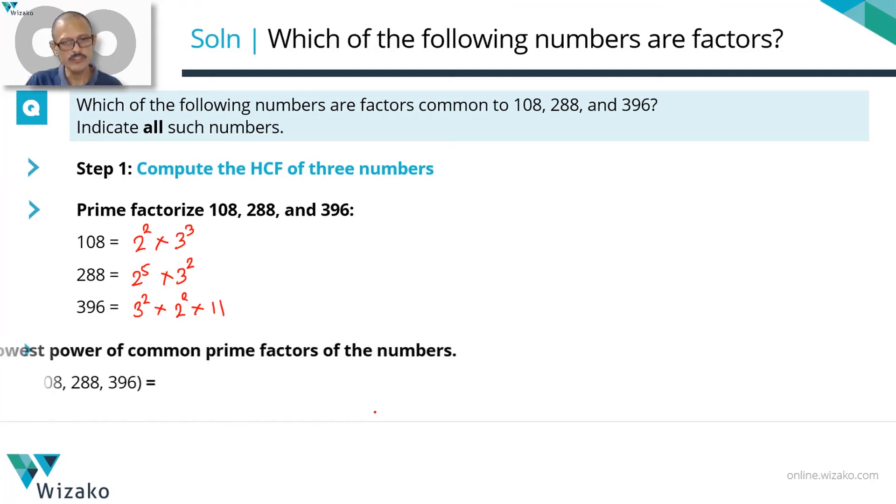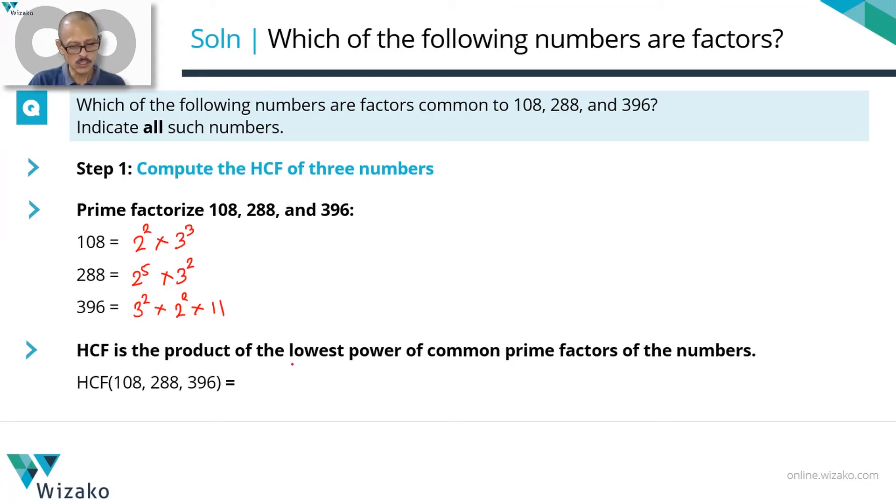The HCF is the product of the lowest power of the common primes. What are all the prime numbers common to all these three numbers? 2 is a prime factor of all the three numbers. So let me take 2. 3 is also a prime factor common to all the three numbers, 11 is not. So these are the two prime factors common to all the three numbers. What is the lowest power of 2 that we find in these numbers? 2 squared, 2 to the power 5, 2 squared. So we'll go with the 2 squared. In the case of 3, 3 cubed, 3 squared, 3 squared. So let's go with the 3 squared. The product of the lowest power of the common primes is the HCF. 2 squared is 4, 3 squared is 9. So 4 times 9, 36 is the answer. So HCF of all these three numbers is 36.